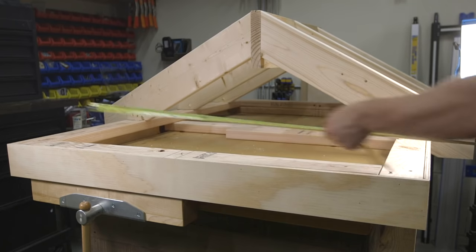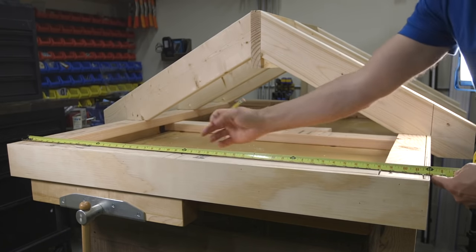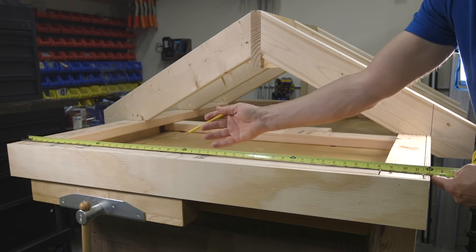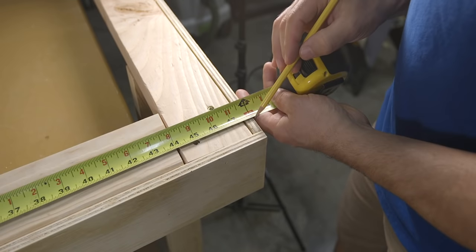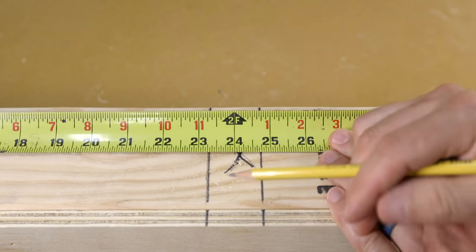The run is half the distance of the total span minus half the thickness of the ridge material. For example this mock-up has a total span of four feet which is measured from its outside edges so half of that is 24 inches.